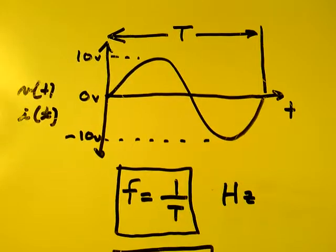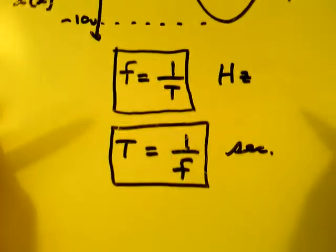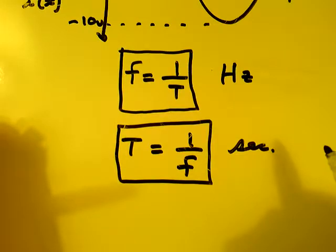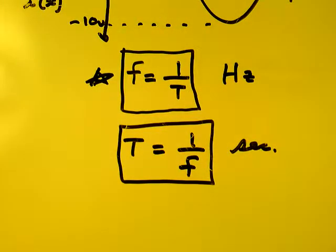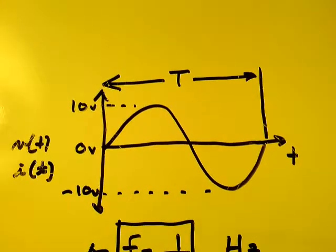And the reciprocal of this formula, you can see, is the period is one over the frequency in seconds. So this equation right here is very, very important. Determine the frequency from the period. And it works for any repetitive waveform, analog and digital.